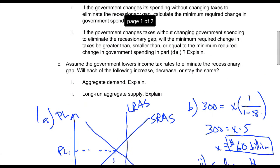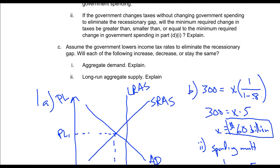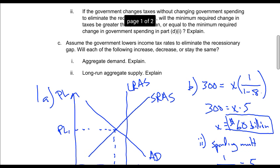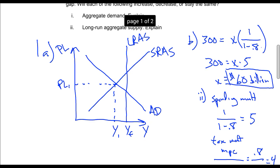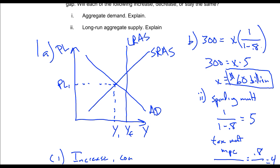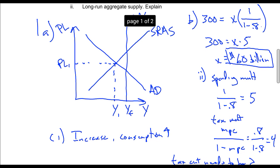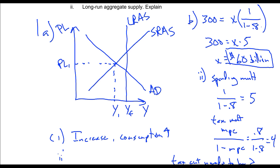Assume the government lowers income tax rates to eliminate the recessionary gap. Will each of the following increase, decrease, or stay the same? Aggregate demand will increase. If you cut taxes, people will have more money. Consumption will increase. Why does aggregate demand increase? Because consumption will go up as people have more disposable income.